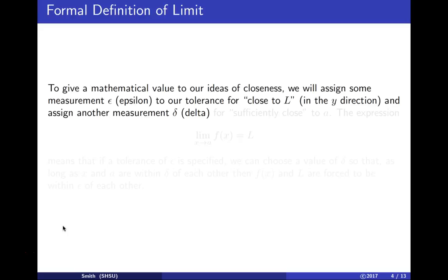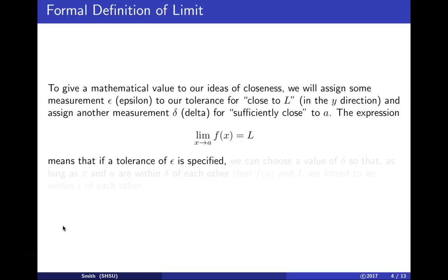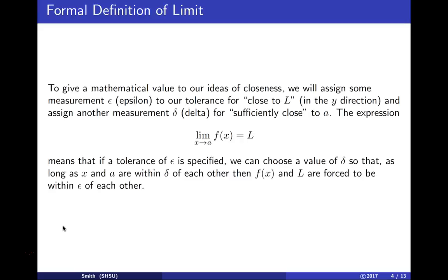Given that, we're going to assign another measurement delta for being close to a along the x-axis. So the limit as x approaches a of f of x equals L means that given this tolerance epsilon, we can find a value delta so that as long as x and a along the x-axis are within delta of each other, then f of x and L are forced to be within epsilon of each other.